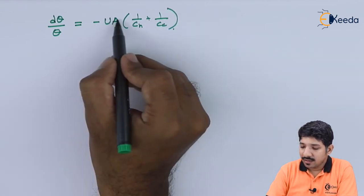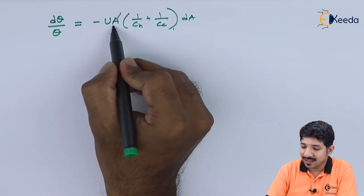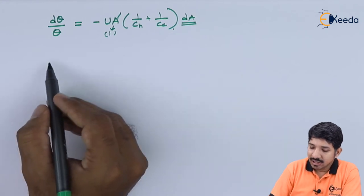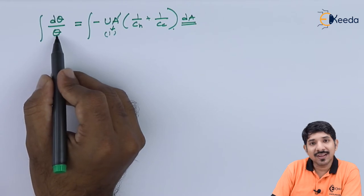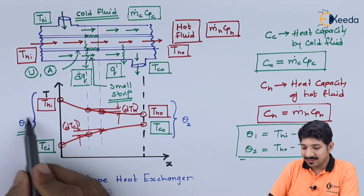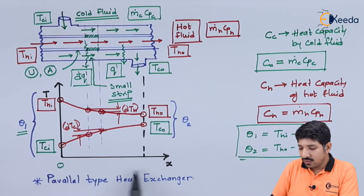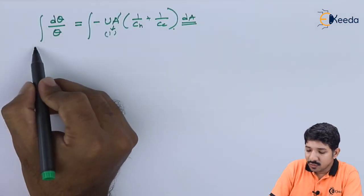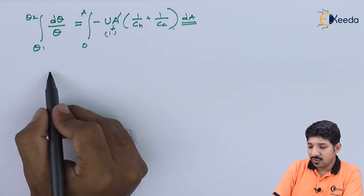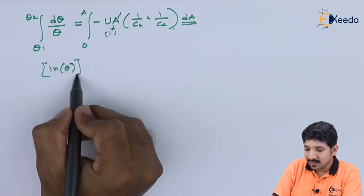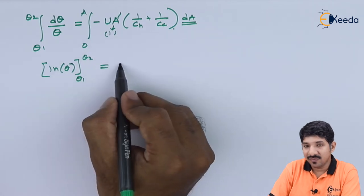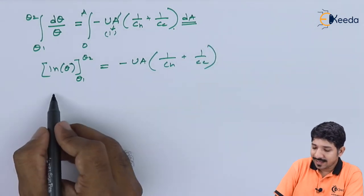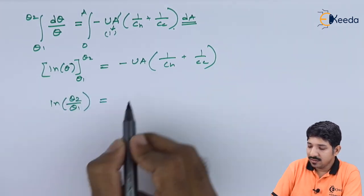The area integrates from 0 to A, and theta integrates from theta 1 to theta 2. This gives: ln(theta 2 / theta 1) = −U × A × (1/CH + 1/CC). For the whole heat exchanger, CH = Q / (THI − THO) and CC = Q / (TCO − TCI). Substituting these, 1/CH + 1/CC = (THI − THO + TCO − TCI) / Q.